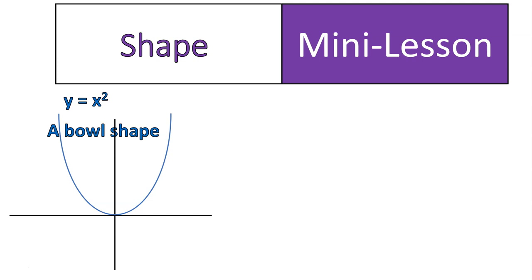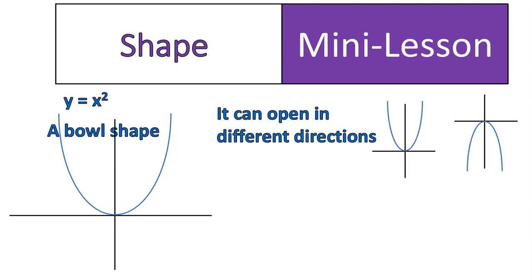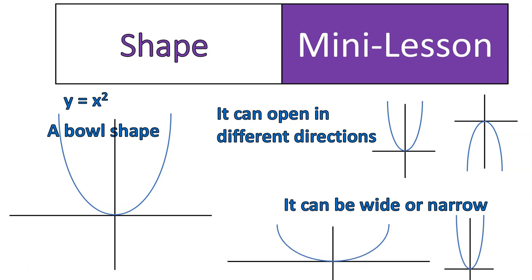Now we're going to talk about how we can change that shape. So we'll start out, this is about a bowl shape. It can open in different directions. We say that this is opening up or opening down. It can also be wide or narrow.